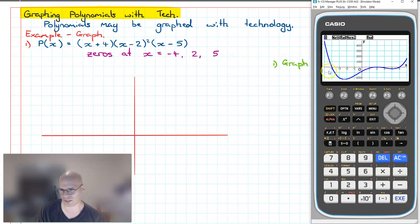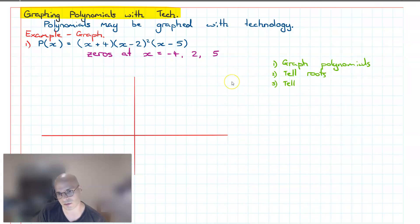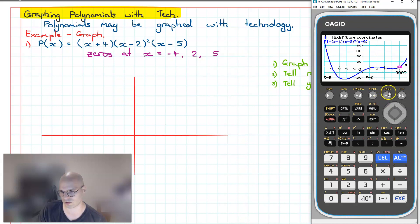Now all of the important features of this function are visible on our calculator screen. To find the roots, we go F5 for G-solve and then F1 for root. It tells us that the first root is at negative 4, then 2, and finally 5 — just as expected. This is a useful function to know especially when your polynomial is not in factorized form. Next, we'll look at how we can determine the y-intercept.